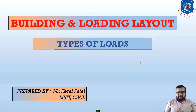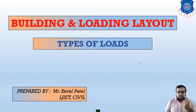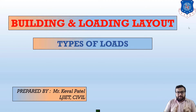Students, we have already discussed that there are total 6 chapters in your DRC SC syllabus. There are 5 modules in which 6 chapters are there, but in module number 1 there are 2 chapters. The first chapter is Building and Loading Layout and the second chapter is G plus 3 RC Building.